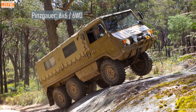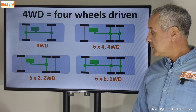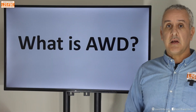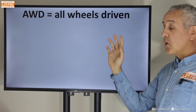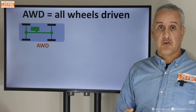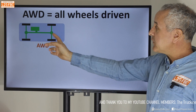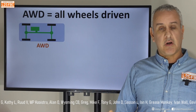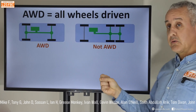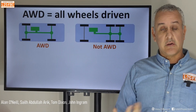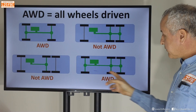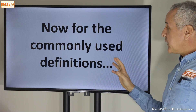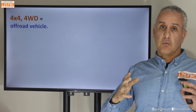We can also call a six-by-six or a six-by-two — that's the number of wheels with the number of driving wheels. Now, what is AWD? AWD is all driven. Looking at our four-wheel drivetrain, it is also AWD because every single wheel is driven. There's nothing in that definition that says it has to have any off-road capability. A six-wheel vehicle that doesn't drive the front two can't be AWD, but a six-by-six is AWD because all wheels are driven.